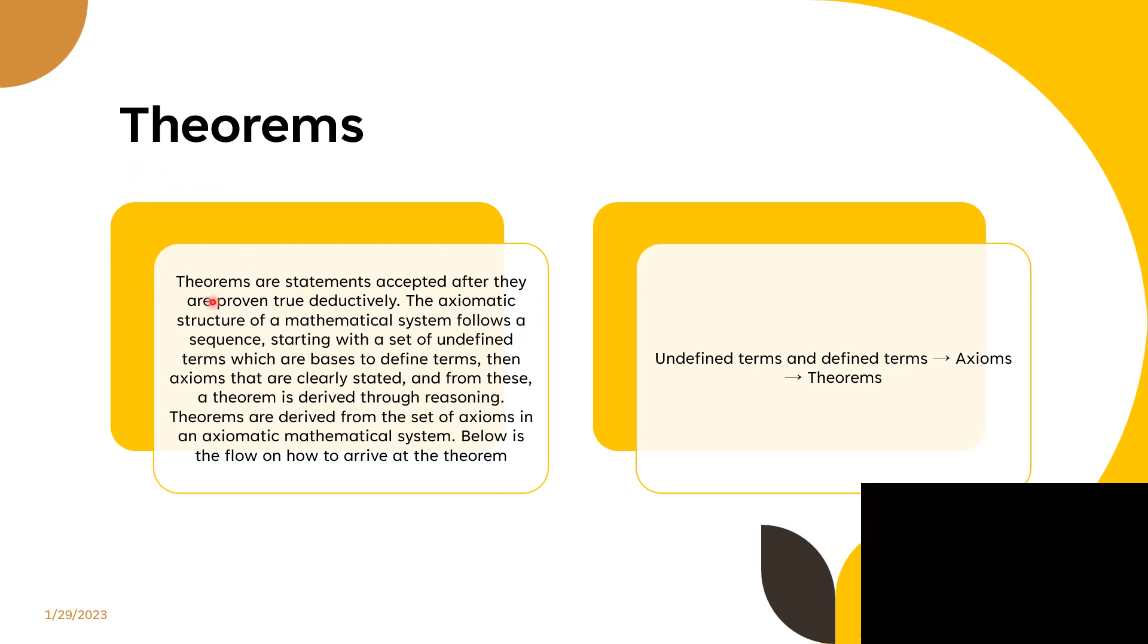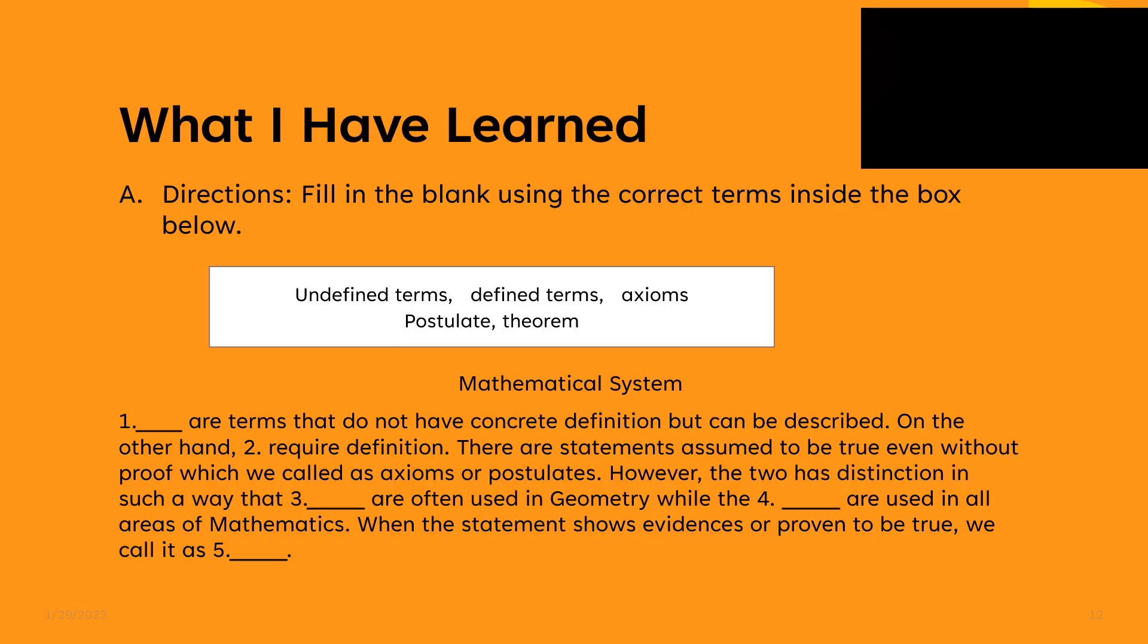Theorems. Theorems are statements accepted after they are proven deductively. The axiomatic structure of mathematical systems follows a sequence starting from a set of undefined terms, which are the basis to define terms, then axioms that are clearly stated, and from this a theorem is derived through reasoning. Theorems are derived from the set of axioms in an axiomatic mathematical system. Below is the flow of how to arrive at the theorem: from undefined terms and defined terms, it goes down to axioms, and then to become a theorem. There are so many ideas that still need to be defined before you have a clear picture of a theorem.